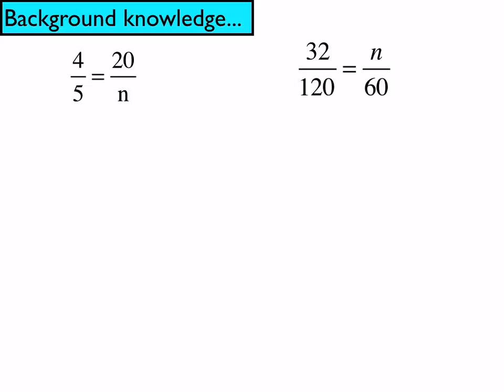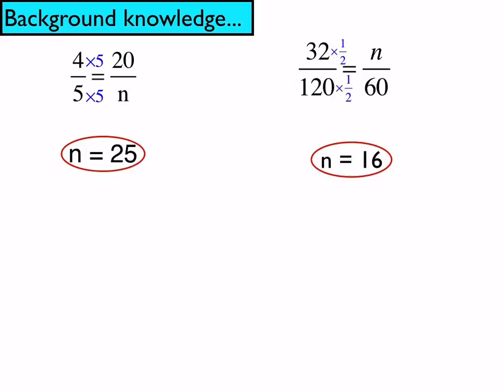It really banks on the idea of these two problems we talked about earlier in the year. What do we have to do to 4 to make 20? Obviously, we multiply by 5. So to maintain proportionality, we would also multiply the denominator by 5, which tells us n is 25. Or in the problem on the right, to turn 120 into 60 — rather than dividing by 2, we need to think of it as multiplying by 1 half. So to find n, we multiply 32 times 1 half, which tells us n is equal to 16.